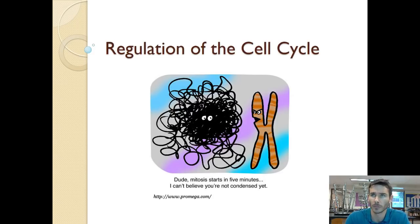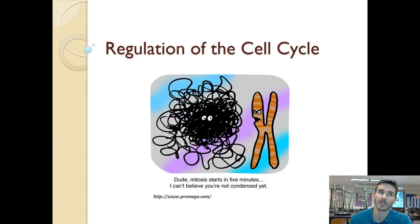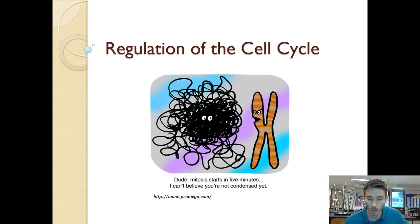Cells divide for important reasons, like to repair injury or grow and develop. We're going to talk about some of the proteins that cause a cell to divide — when it would want to divide and when it wouldn't. Then at the end we'll get into the idea of cancer, which in its most basic explanation is a cell that has gone haywire, dividing uncontrollably and not regulating its division correctly, leading to tumors that can impact the health of the person or organism.